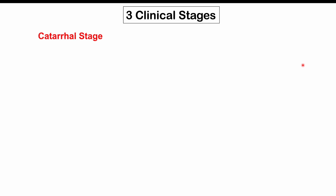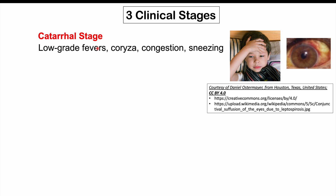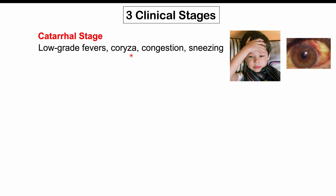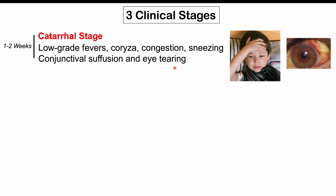There are three clinical stages of whooping cough. The first is the catarrhal stage, which involves low-grade fevers, coryza (runny nose or nasal congestion), and sneezing. This can look like a typical respiratory tract infection, although we can also see conjunctival suffusion and eye tearing. The catarrhal stage lasts approximately one to two weeks.